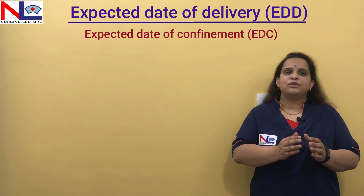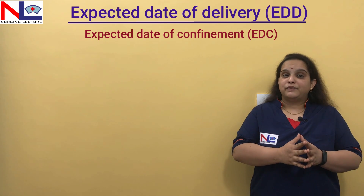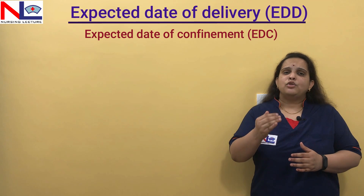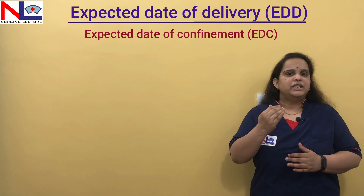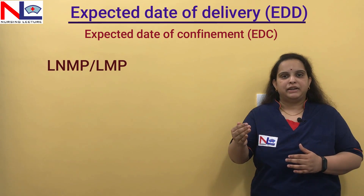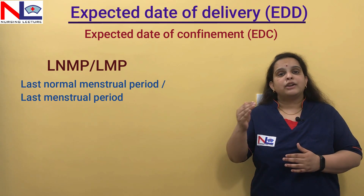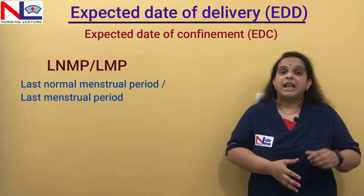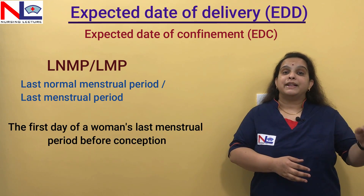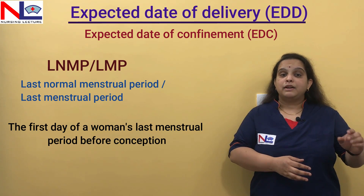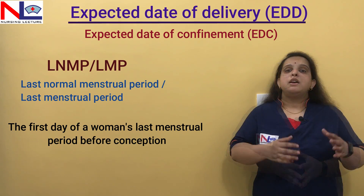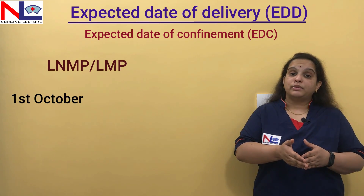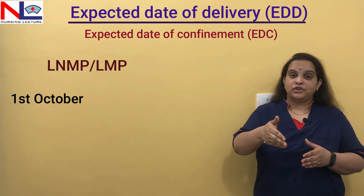Here I'm going to explain a simple formula by which you can also calculate EDD by yourself. Before you calculate, you must know one basic term: LNMP, or last normal menstrual period, also called LMP, last menstrual period. It is the day one of your last menses that stopped before you got pregnant. For example, if you had menstruation in October and it started on the first of October.